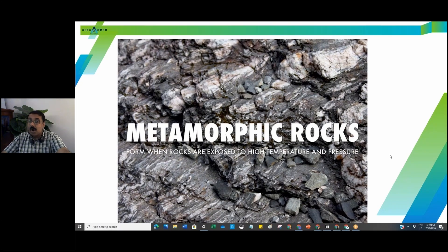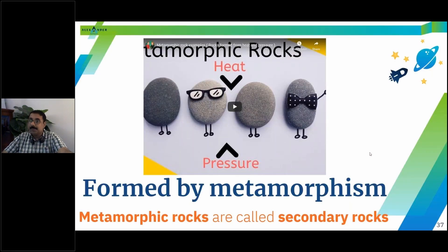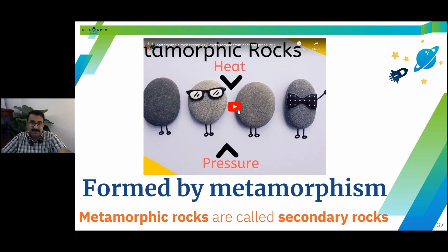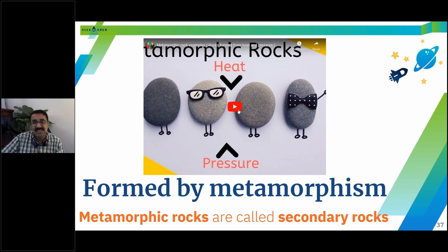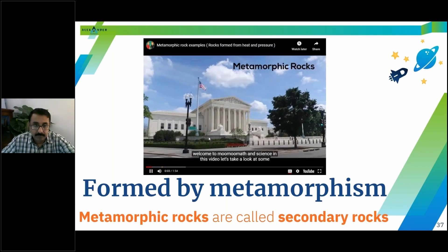Metamorphic rocks are secondary rocks. Only igneous rocks are primary. Even sedimentary rocks are secondary because they're formed from other rocks. Metamorphic rocks are formed by metamorphosis — not from sediments, but from the change in existing rock.